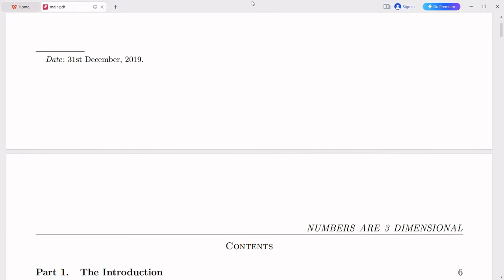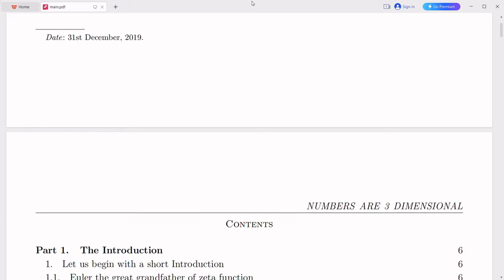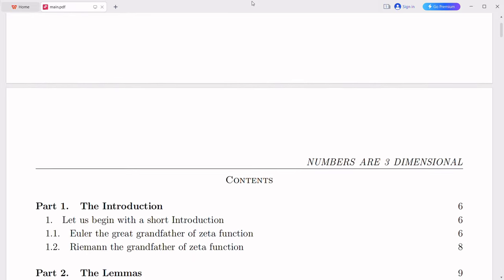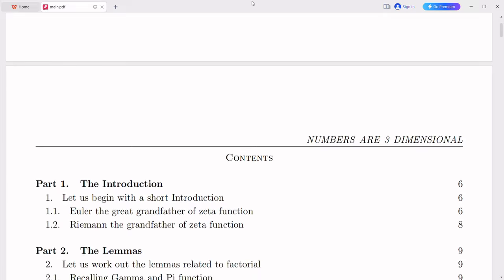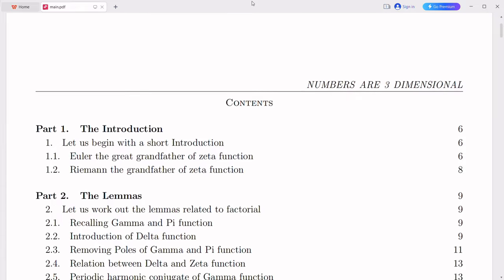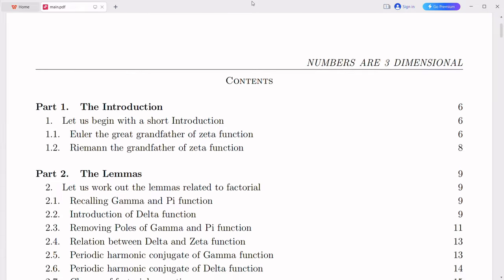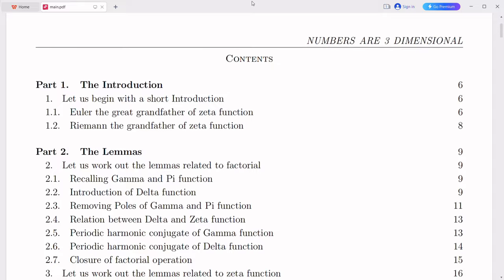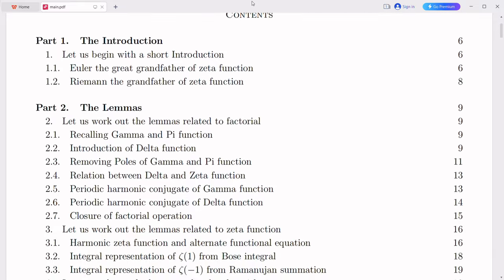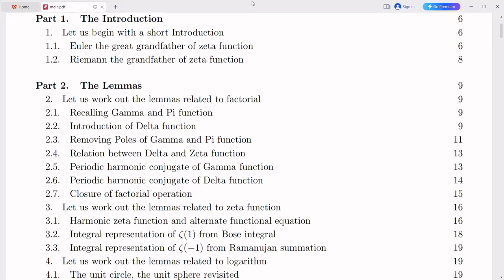Before we delve into the process of extending the domain of the Riemann zeta function and my personal journey in attempting to prove the Riemann hypothesis, let's first grasp the essence of what the hypothesis is all about. The Riemann hypothesis was formulated by Bernhard Riemann, a German mathematician, in 1859.